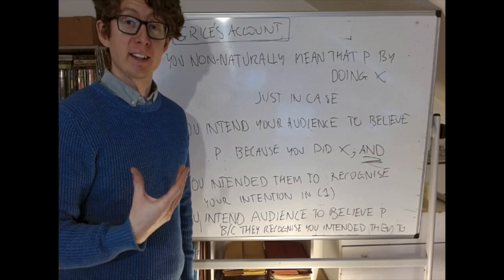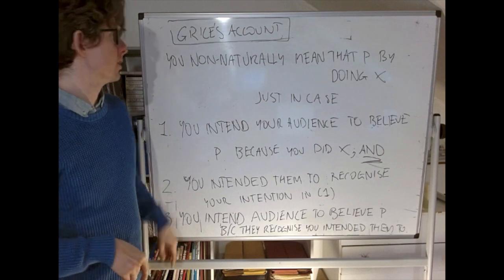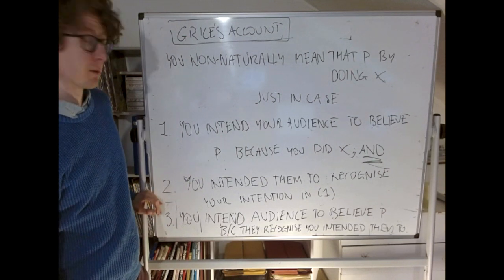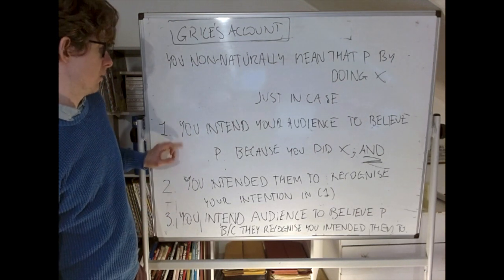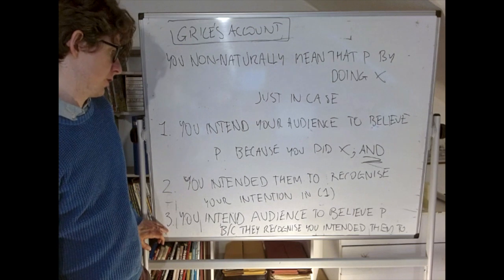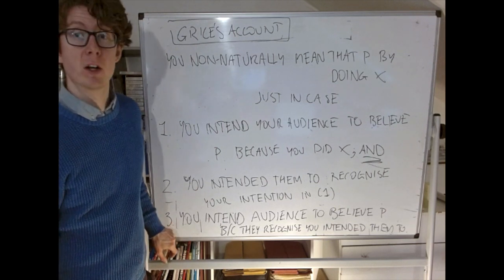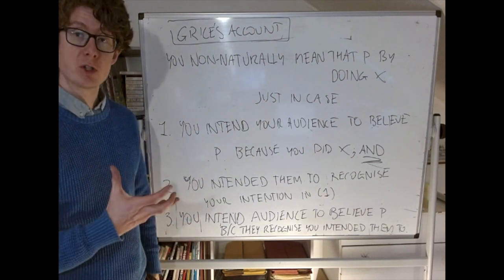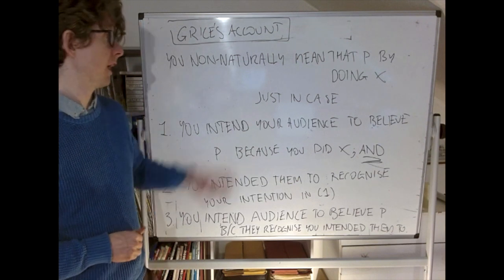So now we arrive at what Grice actually thinks the right account of non-natural meaning is. The account is pretty similar to the ones before — we just add on an extra condition. You non-naturally mean that P by doing X just in case three conditions hold. The first two are the same as before: you intend your audience to believe P because you did X, and you intend them to recognize the intention in condition 1. But we add this further condition, which is that you intend your audience to believe P precisely because they recognize that you intended them to believe P. You want your intention for them to believe something to be part of the reason or evidence they rely on in forming their belief.